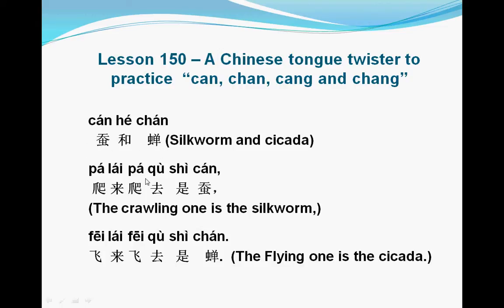Ok, please listen to me. First: 爬來爬去是蚕. 爬來爬去 means crawling. 蚕 means silkworm. 飛來飛去是餐. 飛來飛去 is flying around, come around.